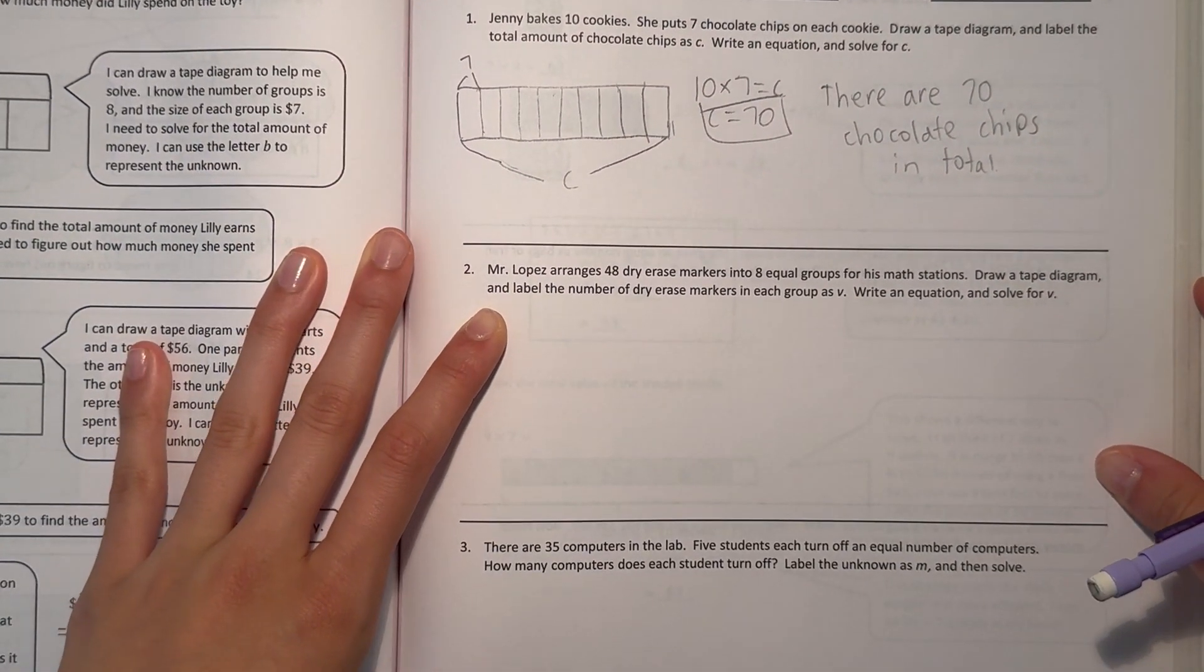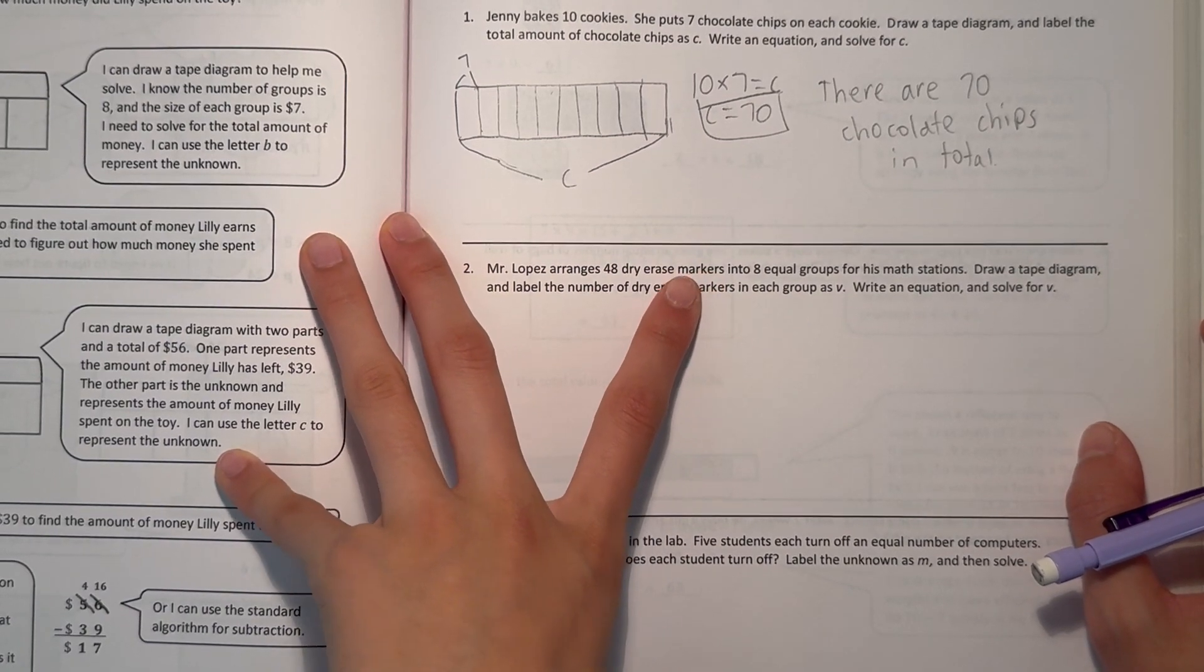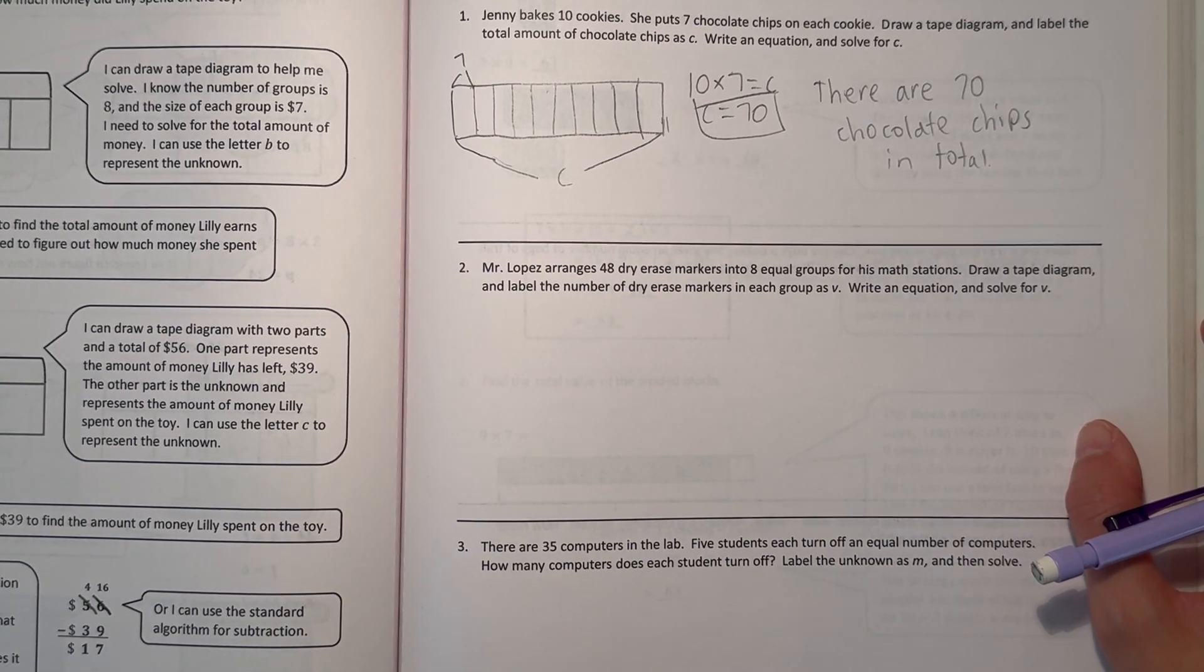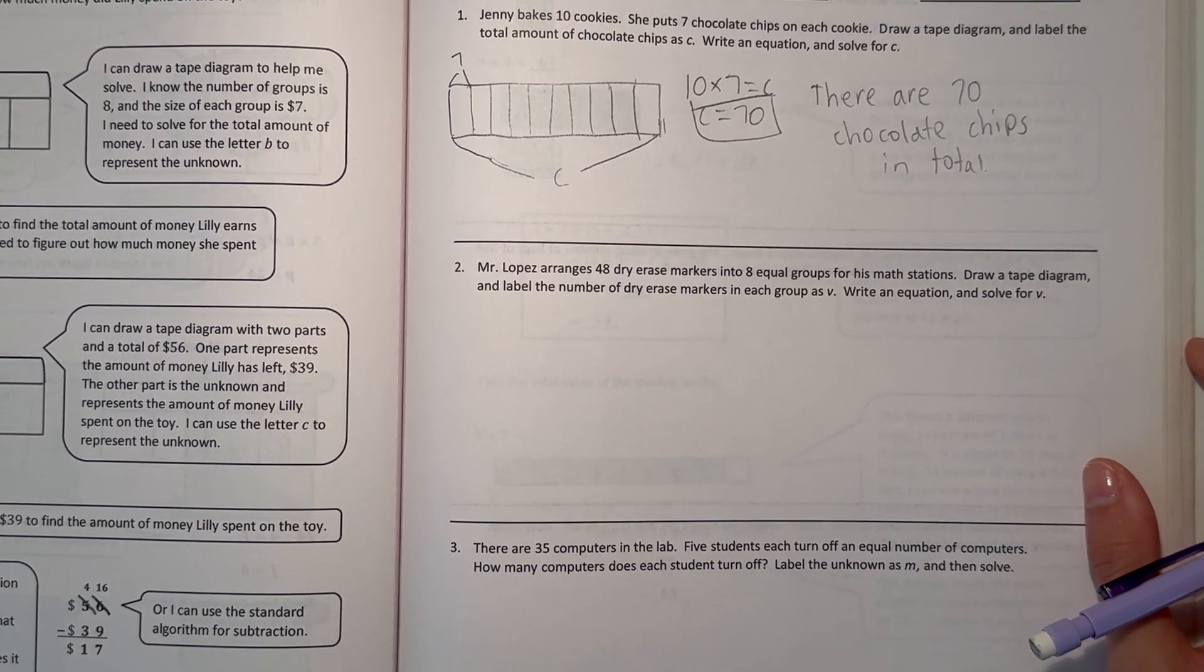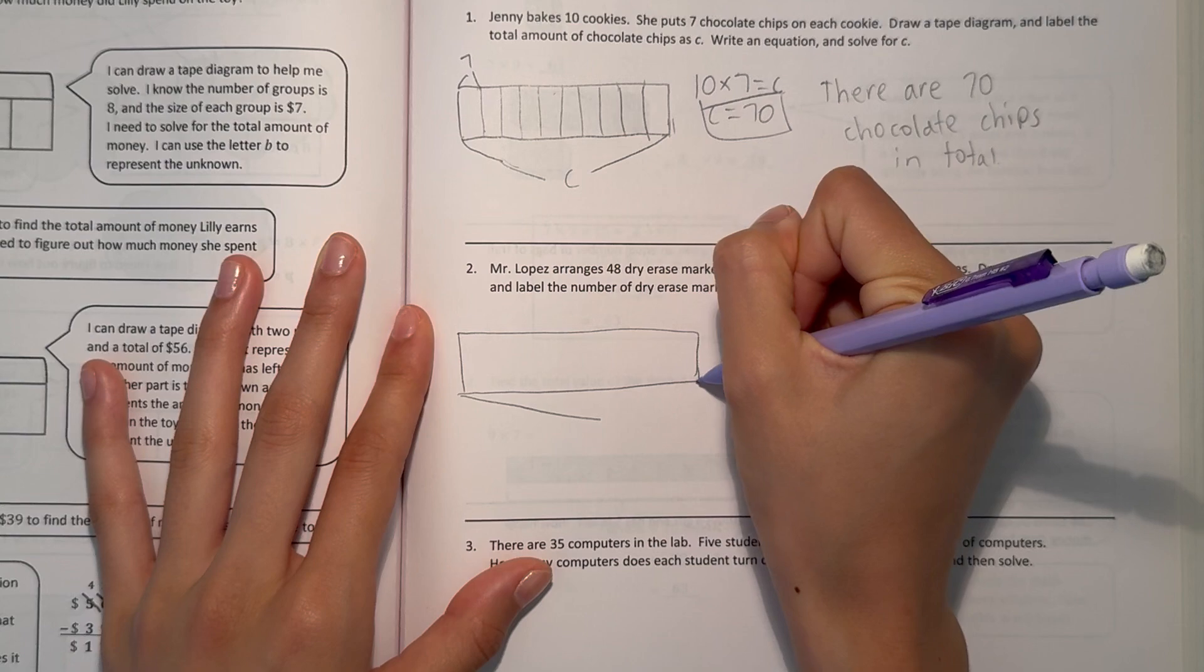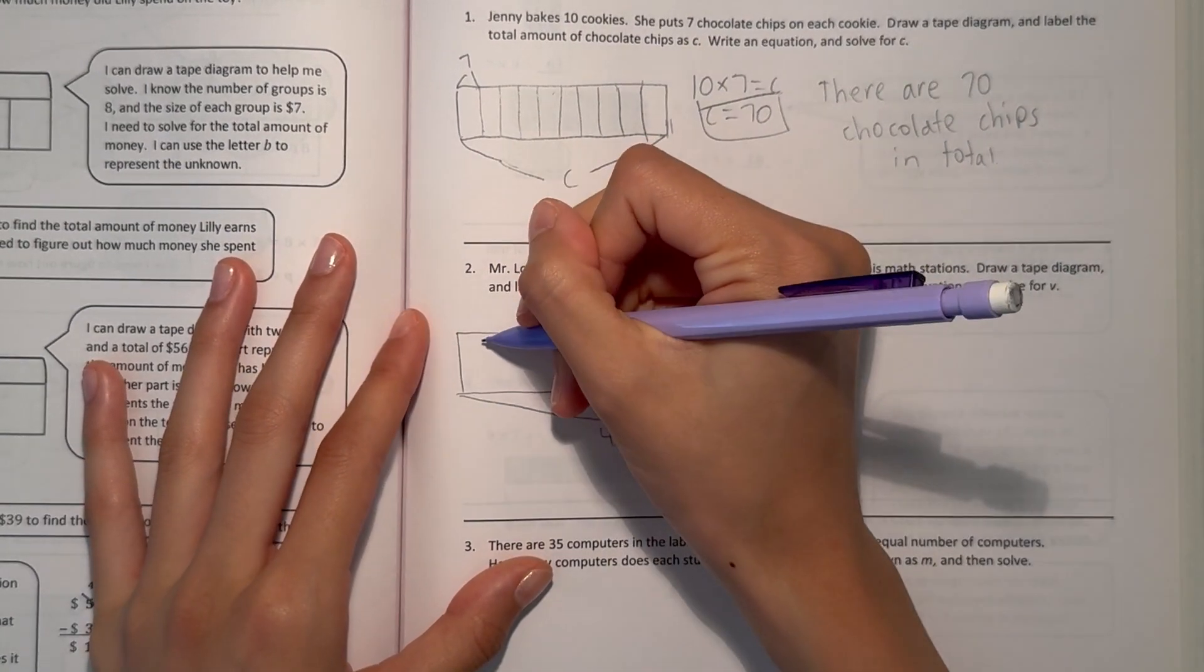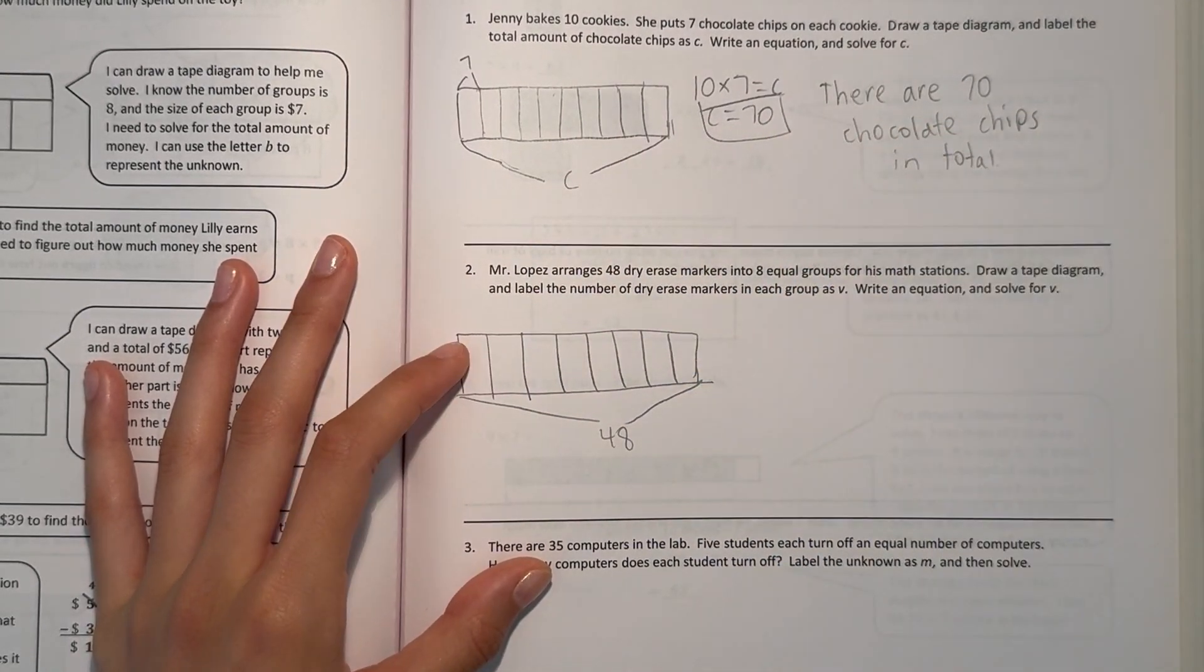Mr. Lopez arranges 48 dry erase markers into 8 equal groups for his math stations. Draw a tape diagram and label the number of dry erase markers in each group as V. Write an equation and solve for V. Alright, so 48 dry erase markers. Our total is 48, and 8 equal groups.